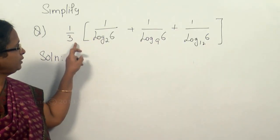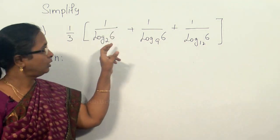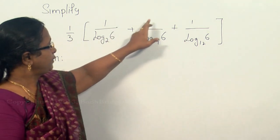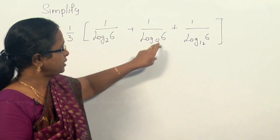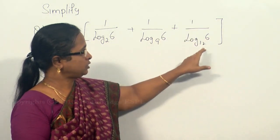The problem given is one-third of 1 by log 6 to the base 2 plus 1 by log 6 to the base 9 plus 1 by log 6 to the base 12.